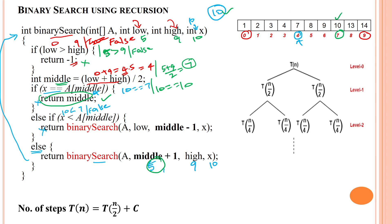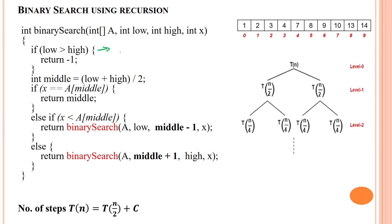From this, observe that the searching element will always be found at the middle index if it exists in the array. Now, analyzing the time complexity: the condition check executes in constant time, calculating the middle element takes constant time, and the if and else-if comparisons each take constant time. Either the true block or false block executes — each in constant time.